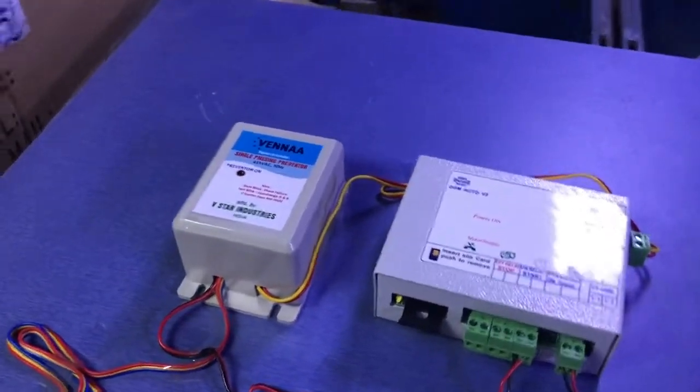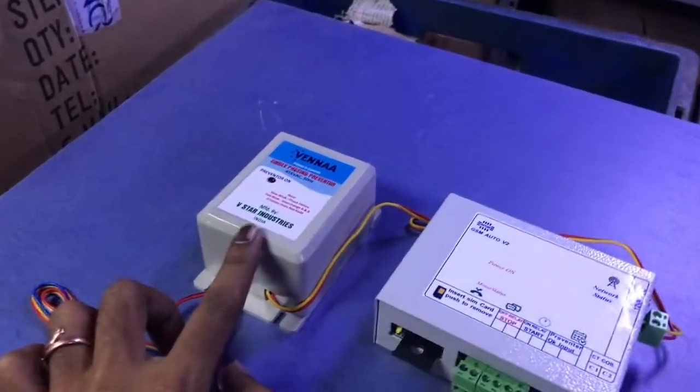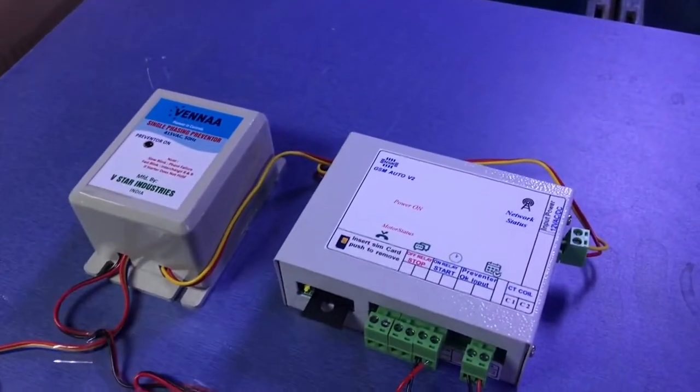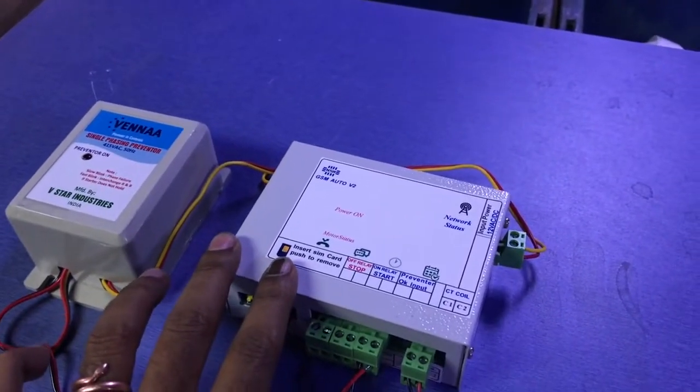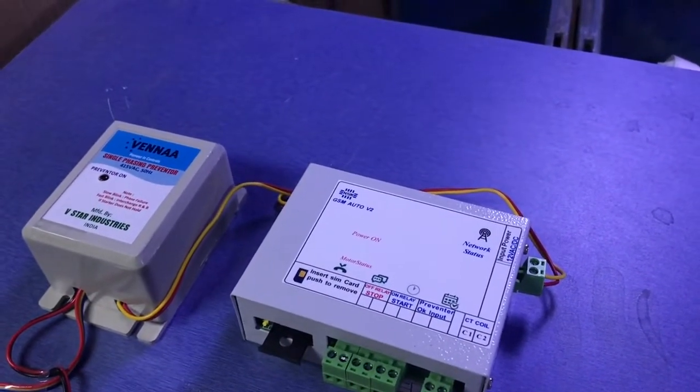First, there are two boxes. This is the preventer box. This is the 3-phase box. This is GSM box. GSM is SMS. This is the registration box.